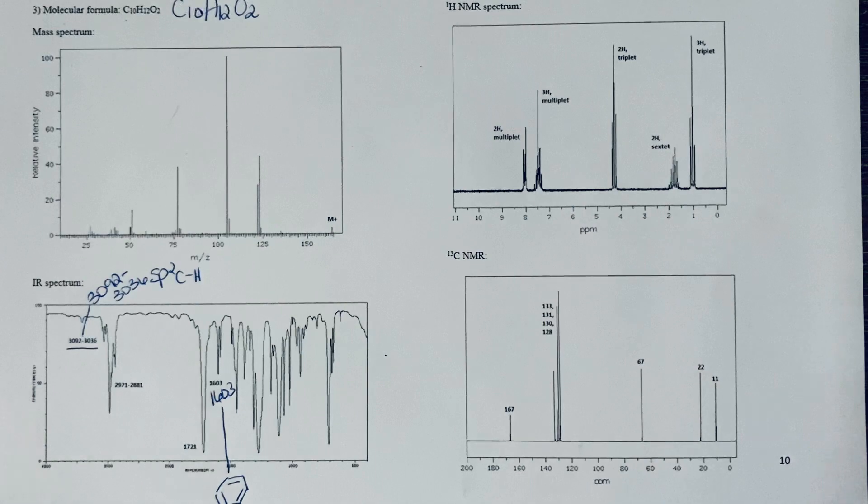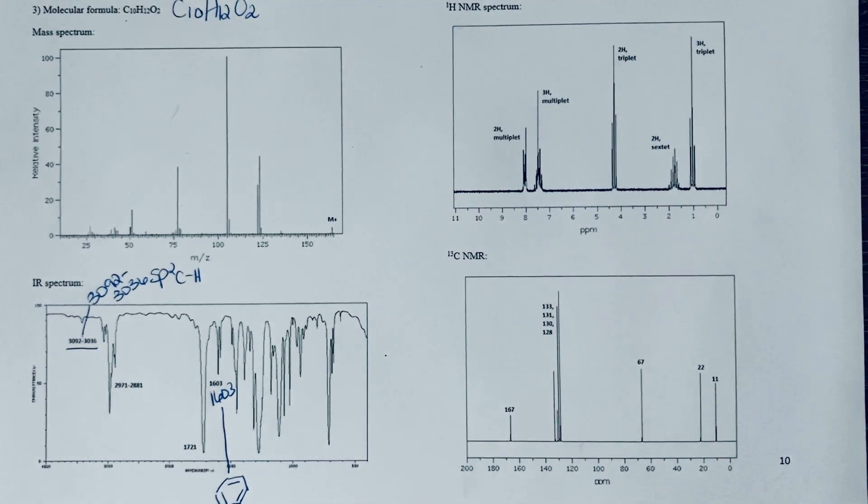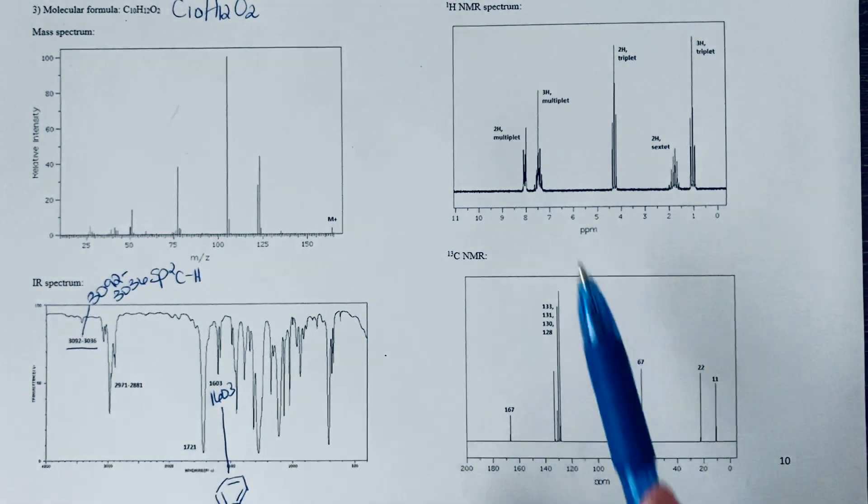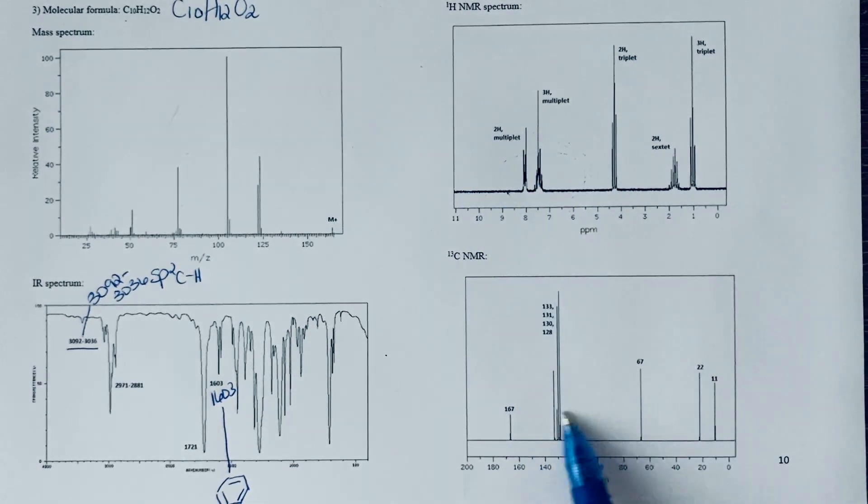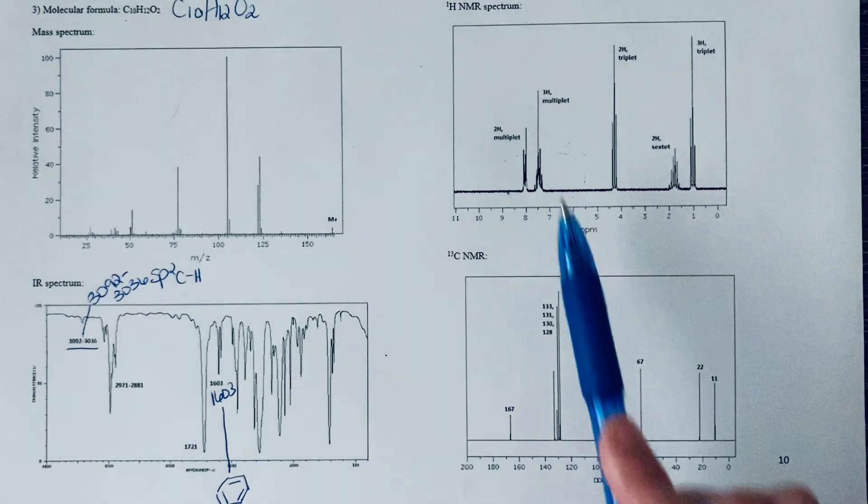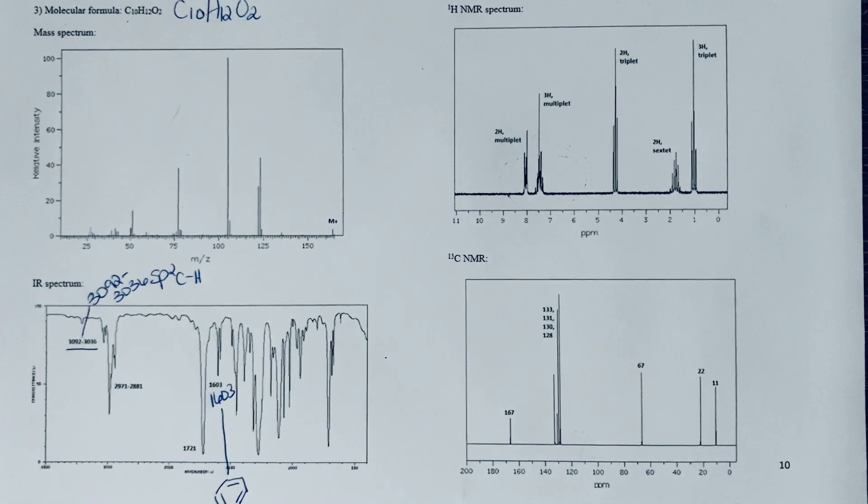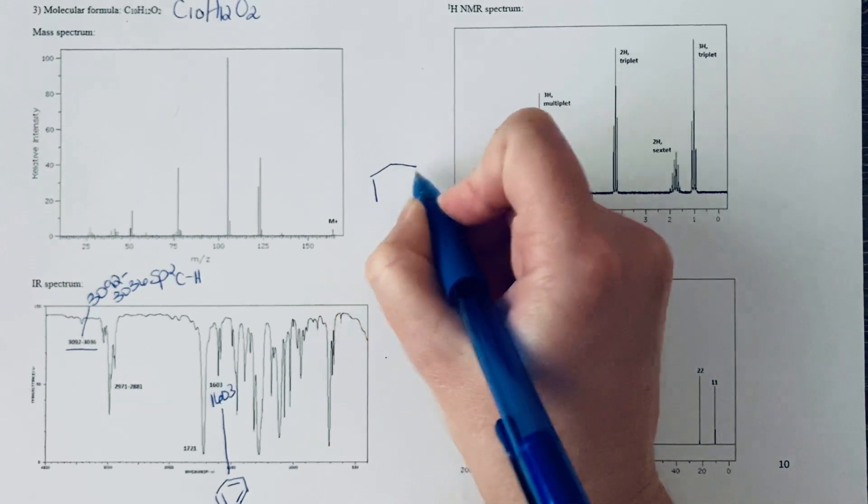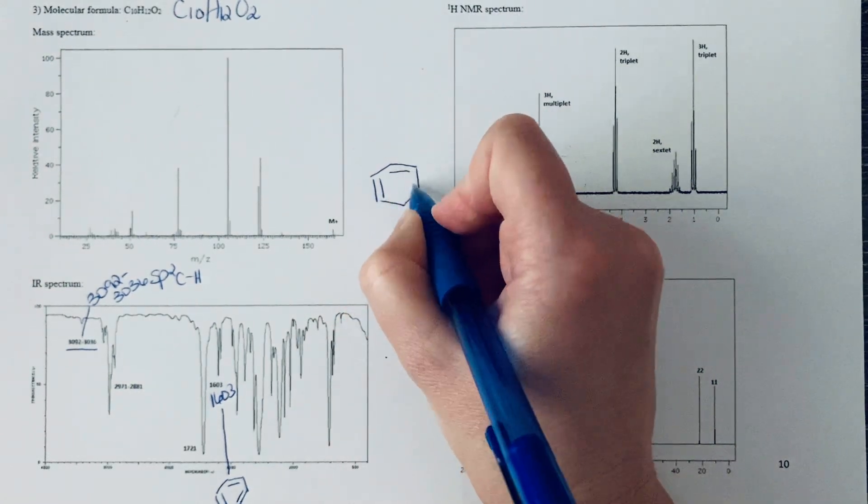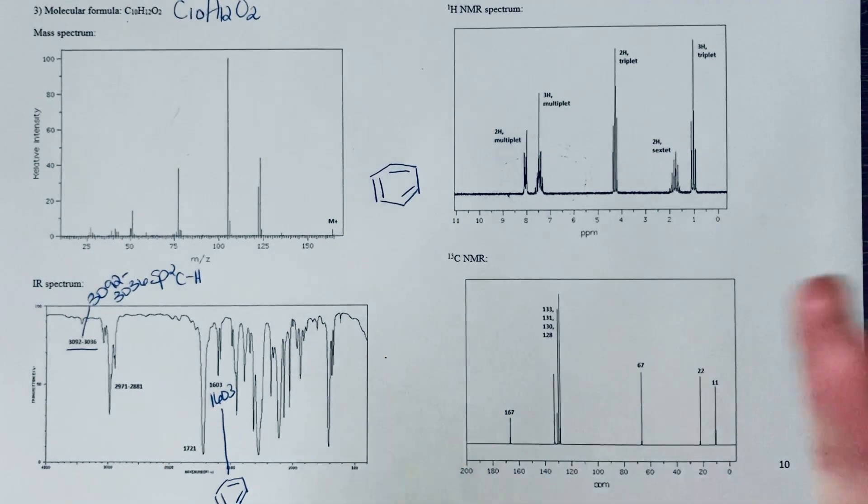By that same token, we should also see signs of that benzene ring in the proton NMR and the carbon. If I was suspecting that, I might look for peaks in the aromatic region of the proton NMR and the aromatic region of the carbon, and these are the ones that I'm circling. It definitely looks like we have a benzene ring, so I will go ahead and draw a benzene ring.